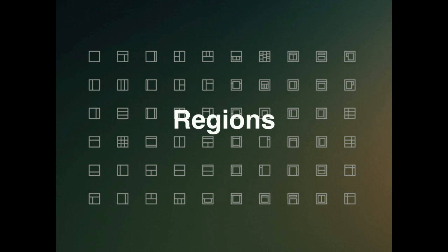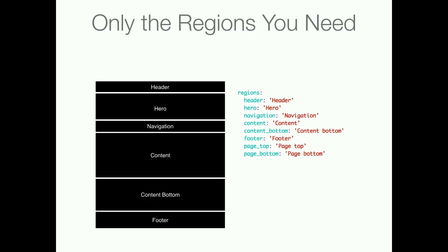The last tool I'll talk about is regions — this might seem really basic, but I don't think I've ever come across a Drupal theme where the regions actually match up to the exact regions needed on the site. There's always some extra ghost region that nobody knows the purpose of — like a sidebar second with no blocks that nobody knows why it's there. One day a site builder puts a block in there and maybe it shows up randomly in the middle of the page. Just make sure the regions actually match up with what you have printed out in your template and the ones you're actually using.